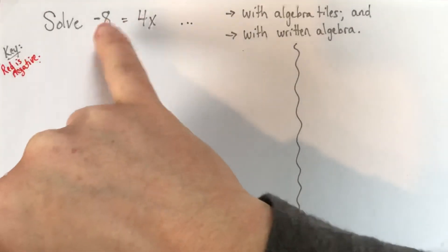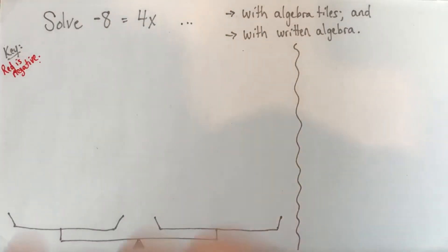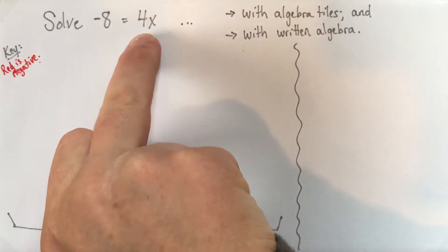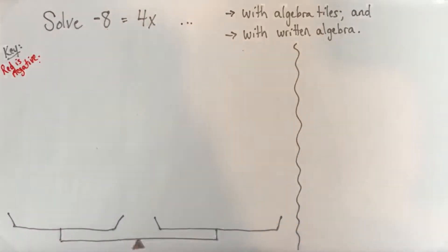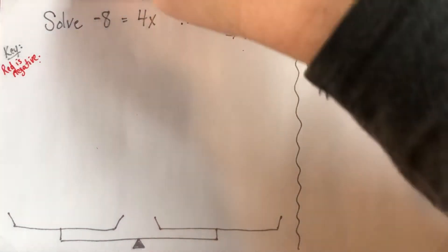Some people right away are a little bit worried if the variable's on the right side instead of the left. It doesn't matter. We're saying that two things are the same. This means exactly the same as 4x equals negative 8. If you want to switch it up, go ahead. You certainly don't need to.